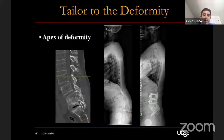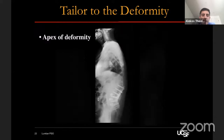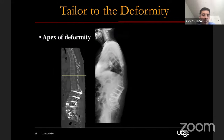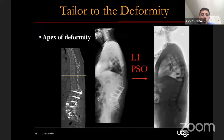This speaks to addressing deformities at their apex. In another patient, we performed a front-back operation ending at L1 cranially. About six weeks post-op, he fell and had a chance fracture through the UIV with an associated compression fracture compromising his sagittal alignment. We ended up doing an L1 PSO to address the deformity at its apex and help restore his sagittal alignment both regionally and globally.